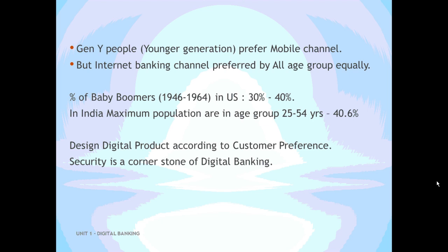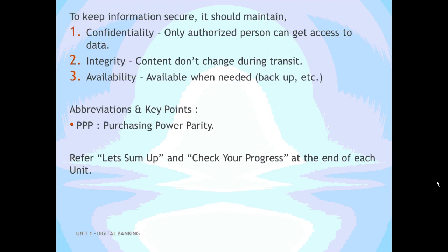Security is a cornerstone for digital banking. Whatever products are designed should be built over a secure and strong security platform. To keep the information secure, we have to ensure three main parameters: confidentiality, integrity, and availability — popularly abbreviated as CIA.